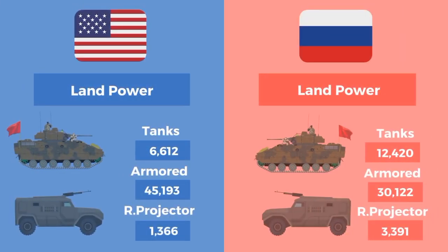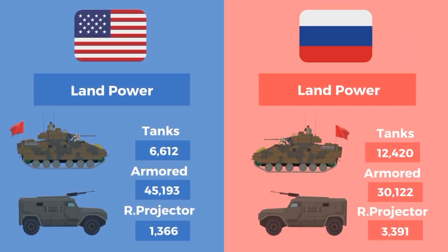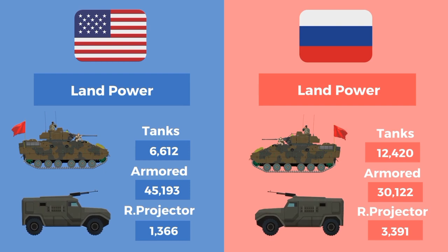Land power of the US: 6,612 tanks, 45,193 armored vehicles, and 1,366 rocket projectors. Land power of Russia: 12,420 tanks, 30,122 armored vehicles, and 3,391 rocket projectors.